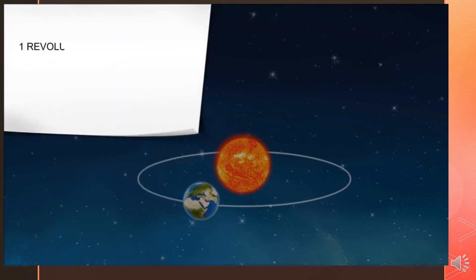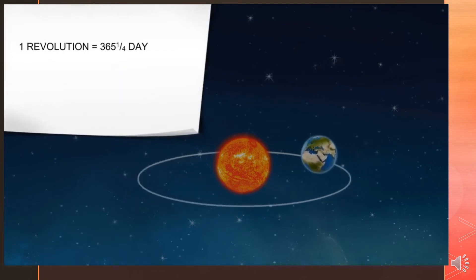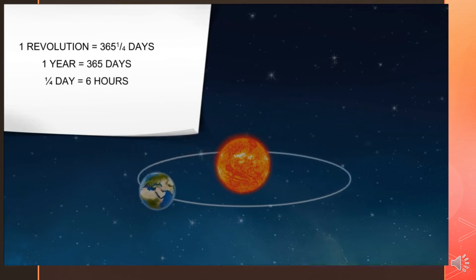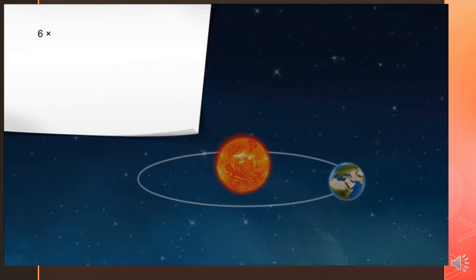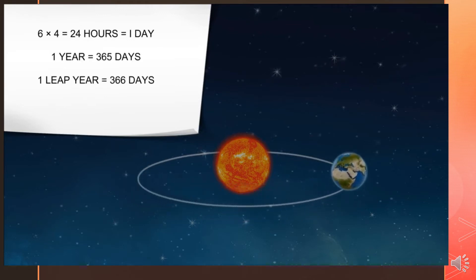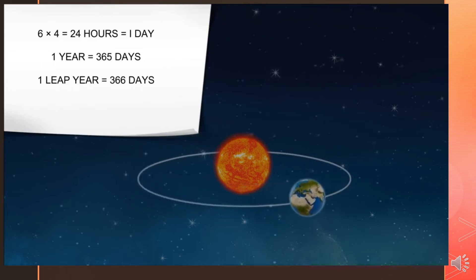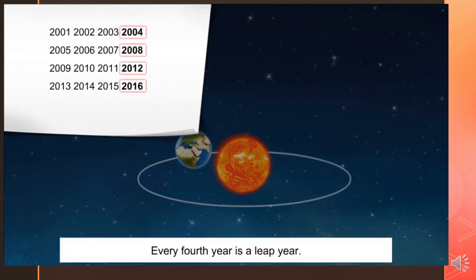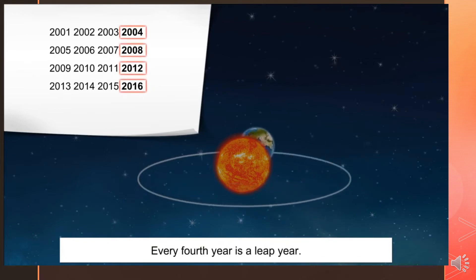The Earth takes about 365 and one-fourth days to complete one revolution. There are 365 days in a year, and the remaining one-fourth day equals six hours. This balance of six hours is added up for four years, which results in an additional day. As a result, there are 29 days in the month of February in that year, making 366 days instead of 365 days. It is known as a leap year, which comes once every four years. A year which is evenly divisible by four is a leap year.